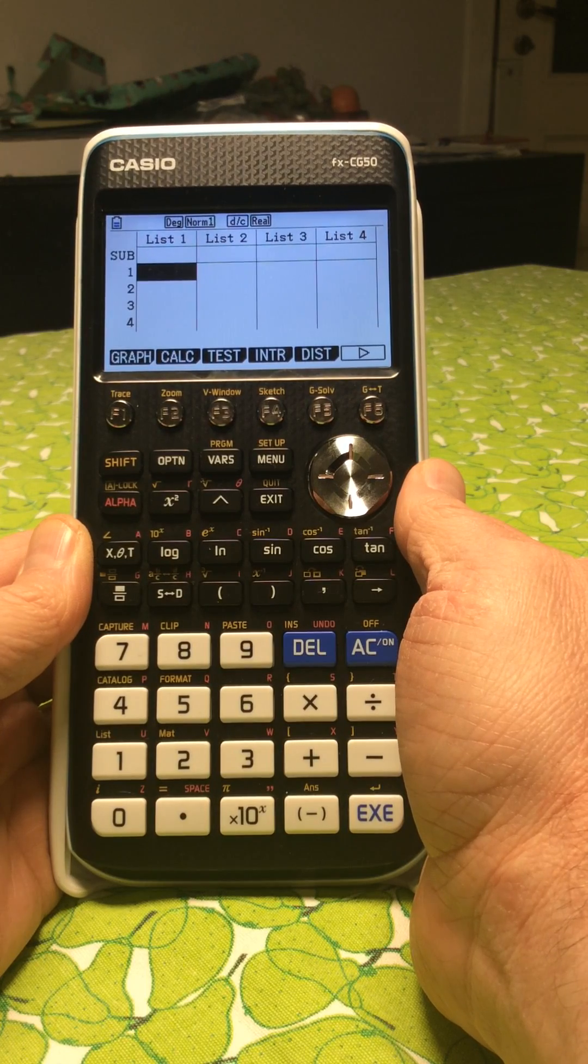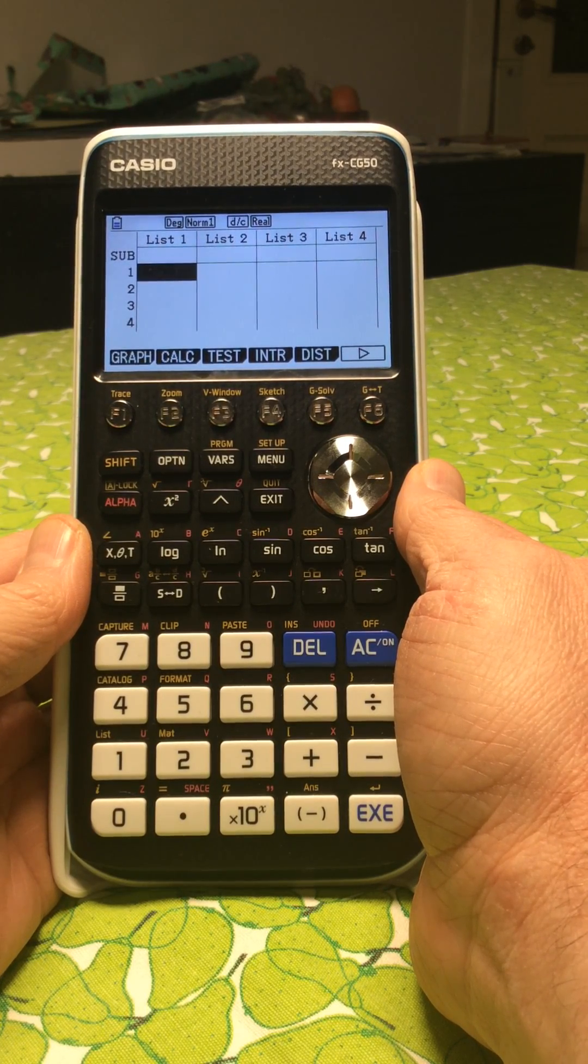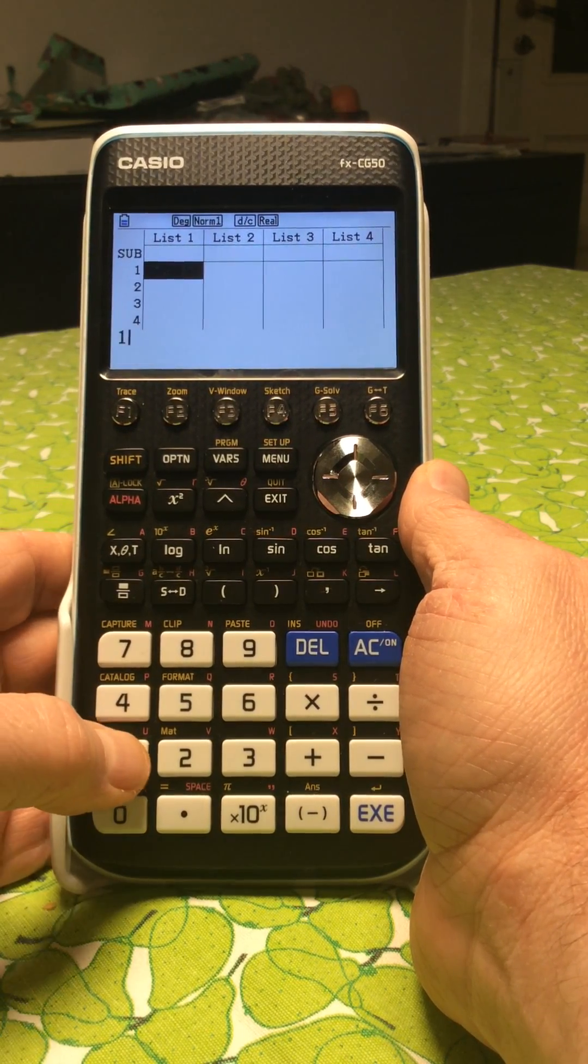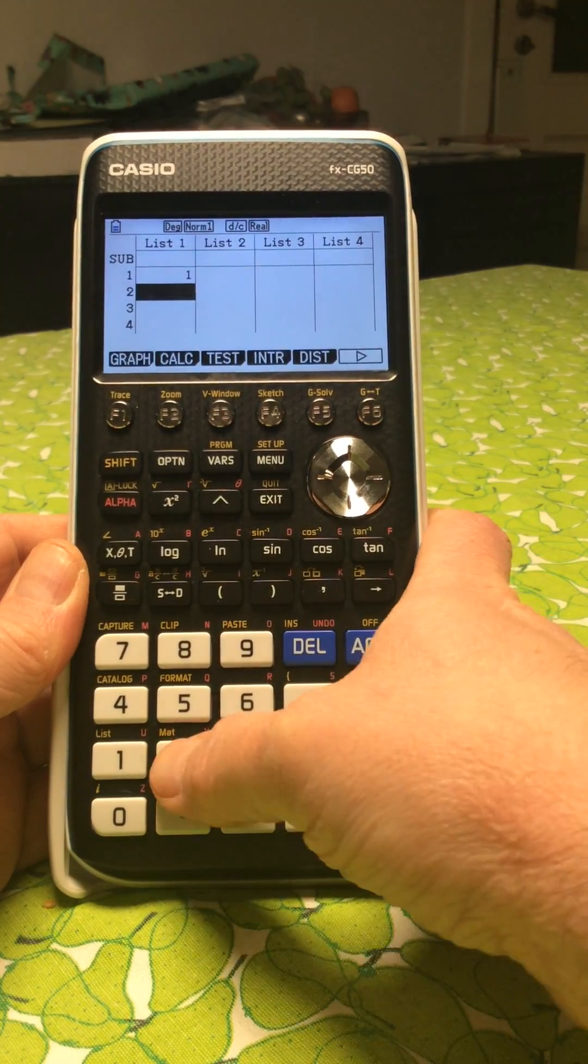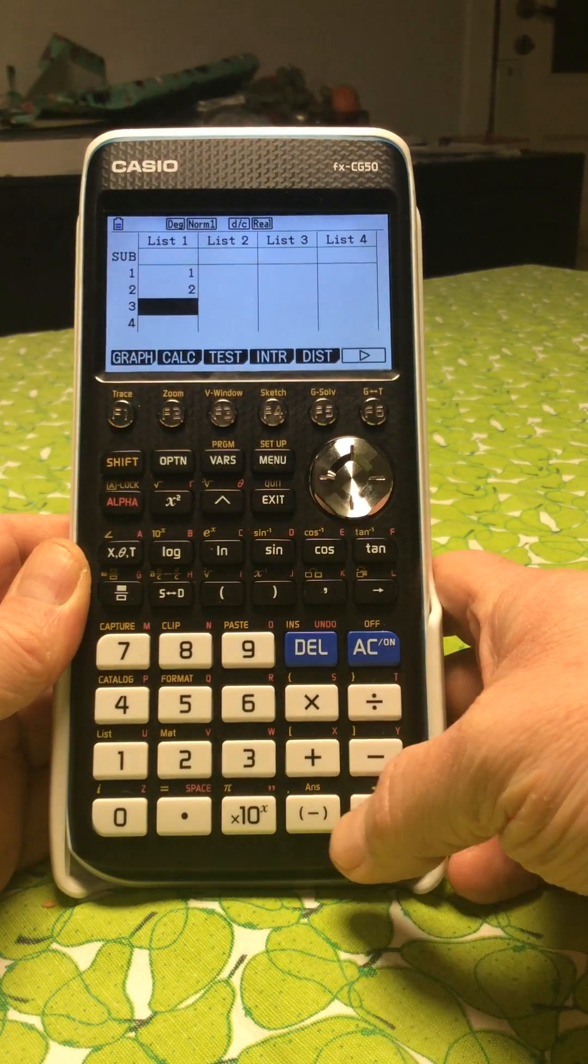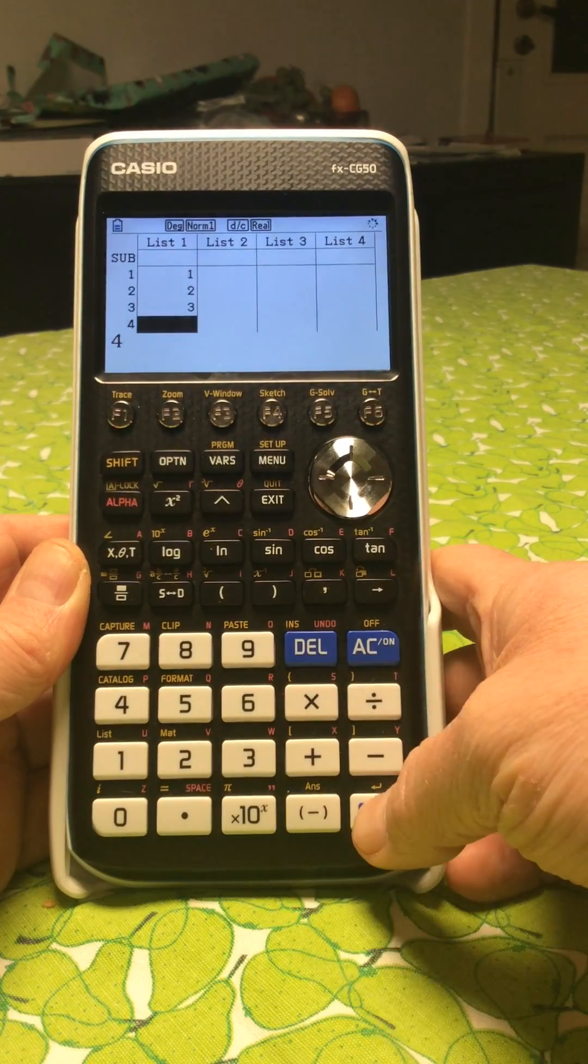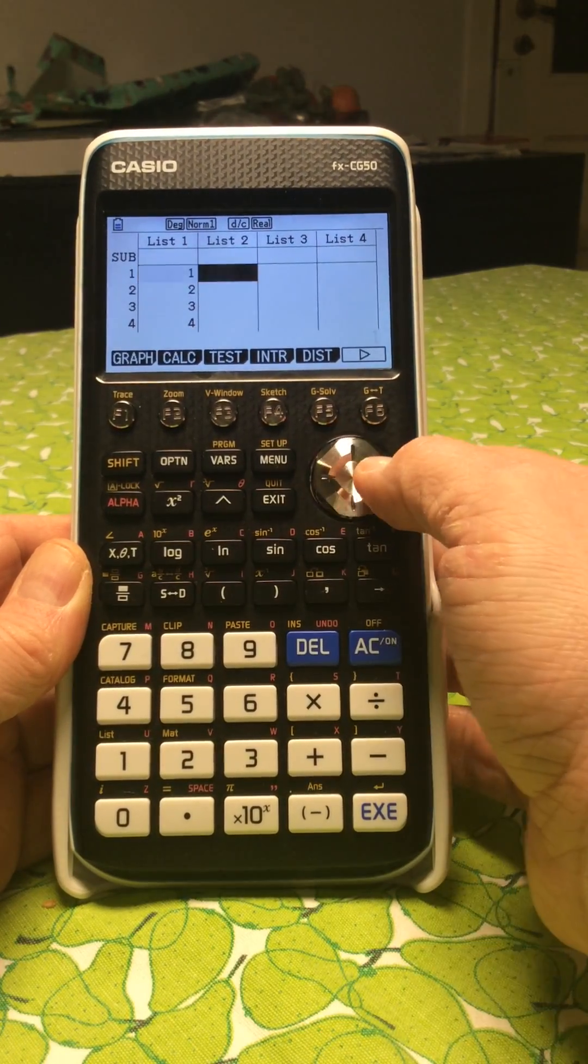some x values in list 1 and y values in list 2. We can do, for instance, 1, 2, 3, 4 for the x values, and for y we can use 2, 4, 5, and 8.